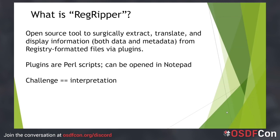The headers of the plugins include a change history and very often include a URL to a website that indicates what led to the plugin being created or explains the extracted data. The biggest challenge of RegRipper remains correct interpretation of the data. There is a great deal of very valuable data within the registry, and it's not always best to view that information in isolation from other data sources. By correlating data from other sources, analysts can better understand what they're seeing and provide greater context for a more accurate interpretation.